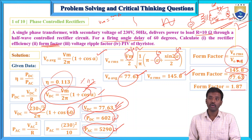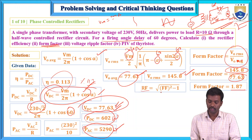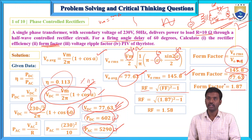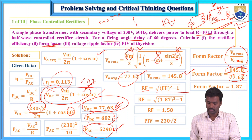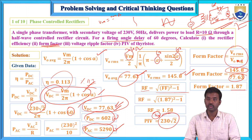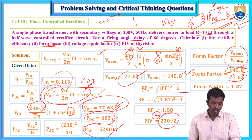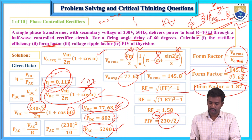The ripple factor formula is: ripple factor = √(form factor² − 1). Substituting form factor equals 1.87 gives ripple factor equals 1.58. The peak inverse voltage equals Vm equals V_RMS × √2, which is 230√2. This completes the solution for efficiency, form factor, ripple factor, and peak inverse voltage for question 1.